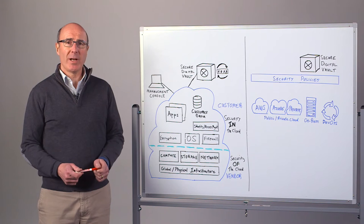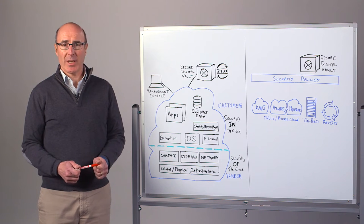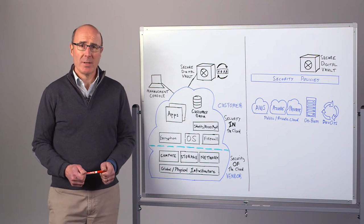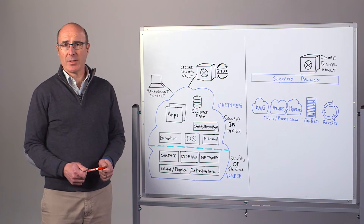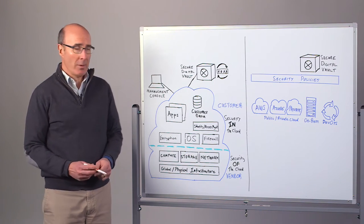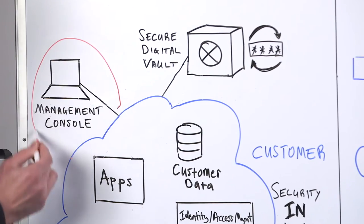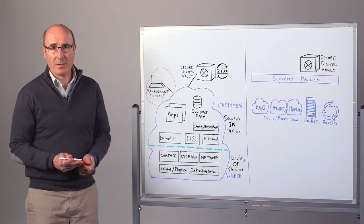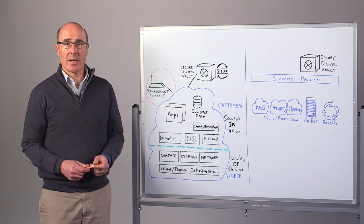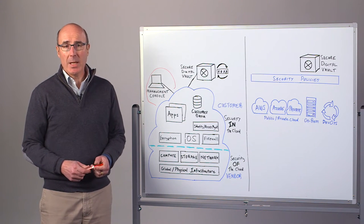Now, I'm sure you already understand the importance of protecting privileged accounts and credentials for your on-premise applications, but what about your cloud applications? If you're using a public cloud vendor, such as AWS or Azure, you'll access your entire cloud infrastructure through the cloud vendor's management console. This management console is incredibly powerful and really does hold the keys to the cloud kingdom, even more so than for on-premises admin consoles.